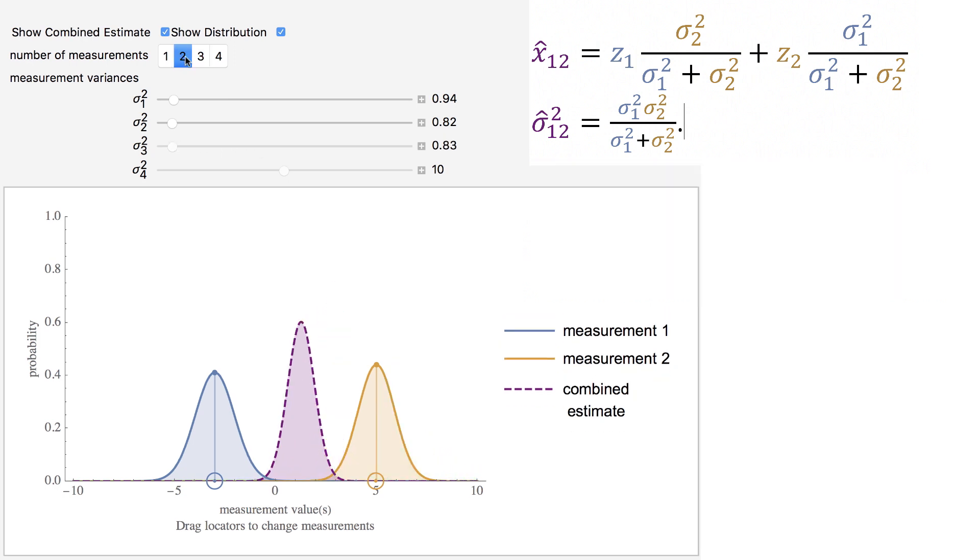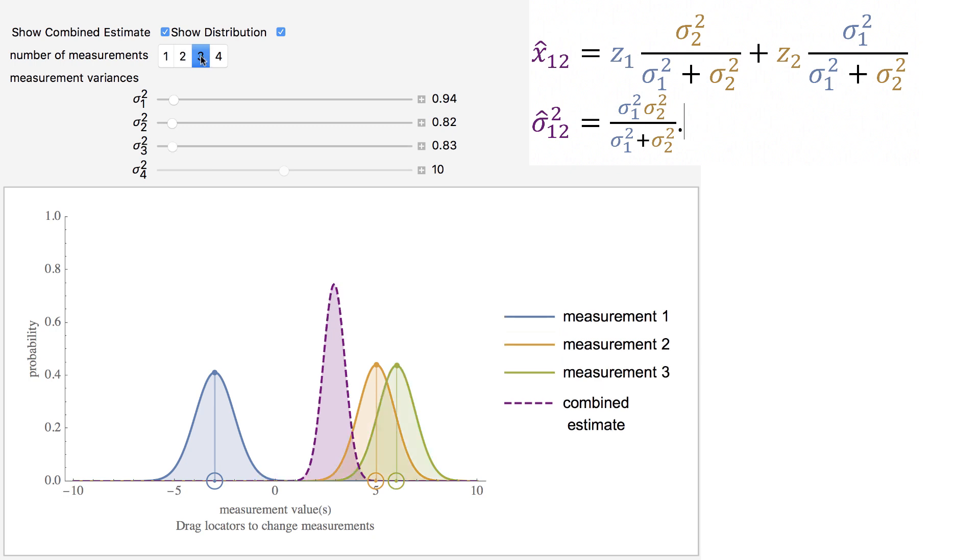Notice that without it, the combined value is right in the middle. I can pull the combination over as I add additional measurements.